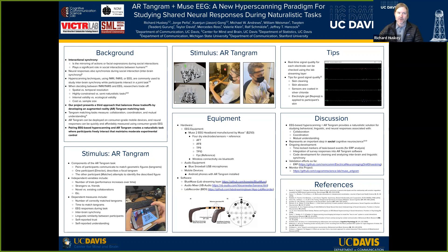The first thing we're going to think about is interactional synchrony. We know that when people interact together, not only their facial expressions often synchronize, their behavioral expressions often synchronize, and this synchronization seems to play some important functions in social interaction. In addition to these behavioral synchronizations, we see neural synchronizations.